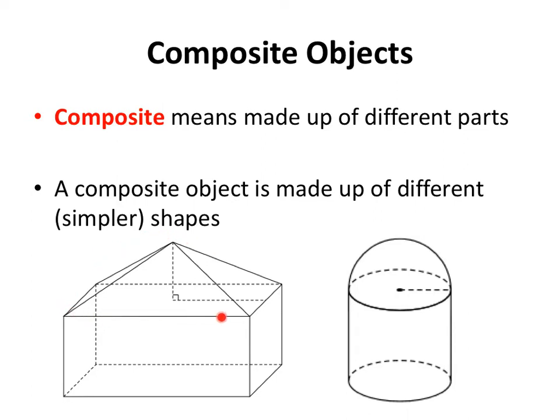In this first shape, we have a pyramid and a rectangular prism. In the second shape, we have a hemisphere and a cylinder.